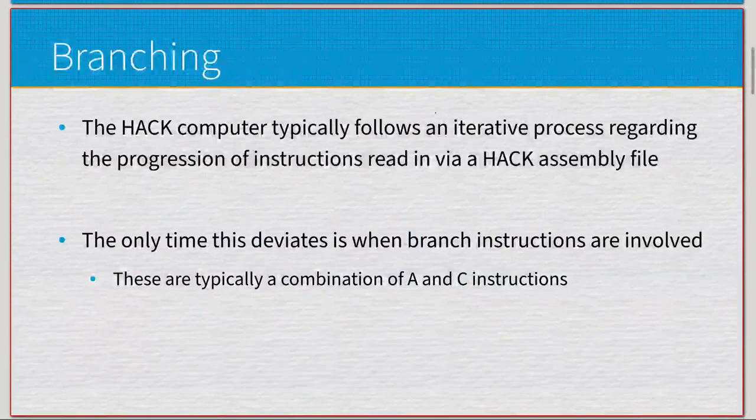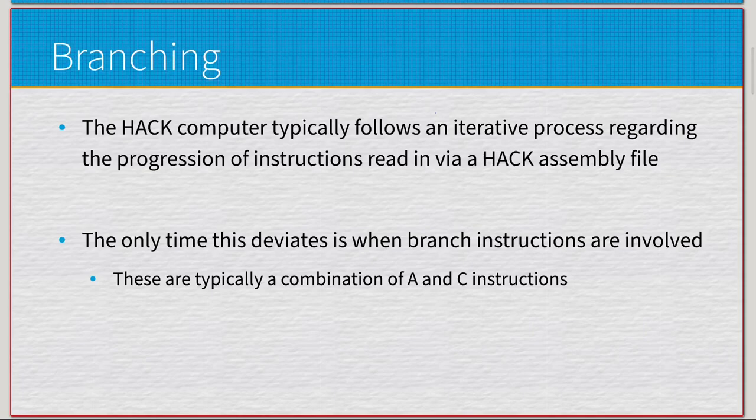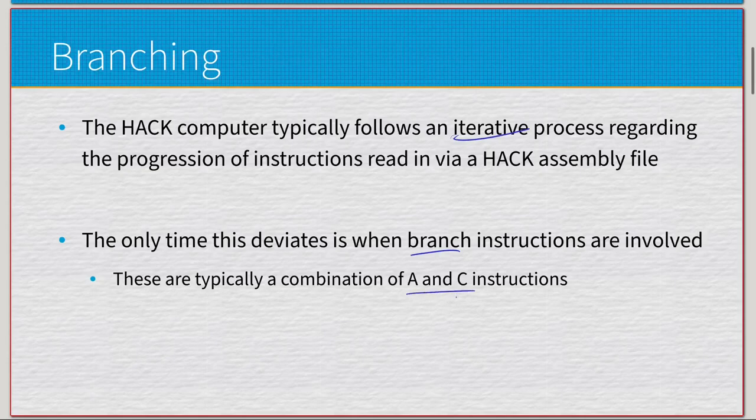Hack assembly generally goes line by line - it's going to start at zero, one, two, three, four, and so on. This iterative process only deviates when we do branch instructions, which are typically going to be in a C pattern. We load in the instruction one, two, and the assignment instruction, and then this C instruction will be something new we haven't seen before.